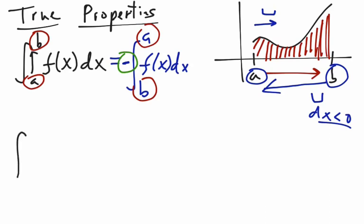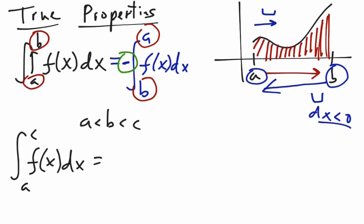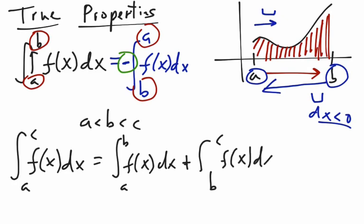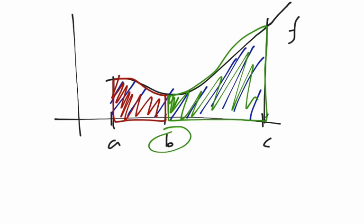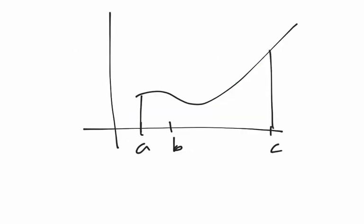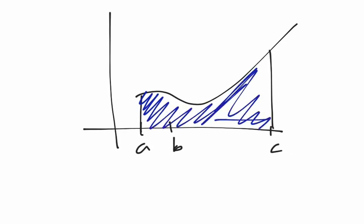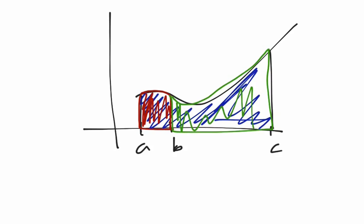Another property: if you have the integral from a to c of f of x dx, and there's some number b between a and c, you can split one integral into two separate integrals. The integral from a to c equals the integral from a to b of f of x dx, plus the integral from b to c of f of x dx. Geometrically, you're just splitting the region into two separate regions and adding their areas.